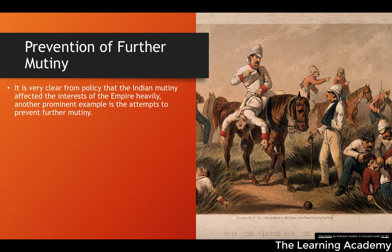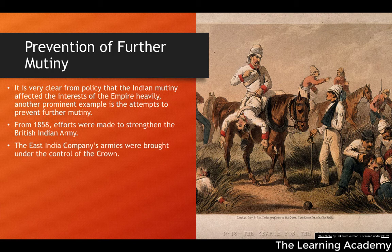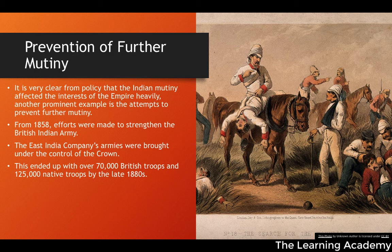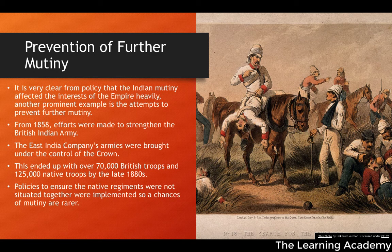From 1858, efforts were made to strengthen the British Indian Army. The East India Company's armies were brought under the control of the Crown, with over 70,000 British troops and 125,000 native troops being administered into the British Indian Army by the late 1880s. Policies were implemented to ensure that native regiments were not situated together, so that different native regiments were split up and mixed with British regiments to ensure no group of regiments would have enough power to mutiny.